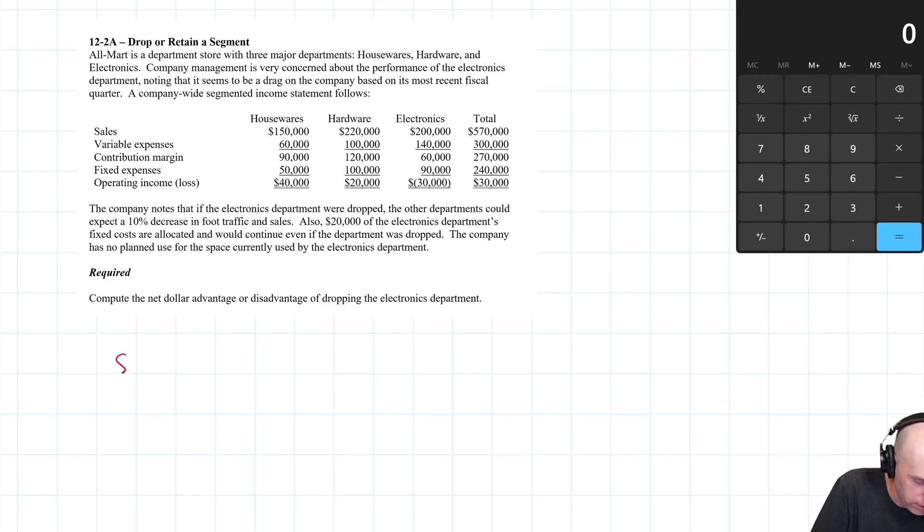I try to recreate the income statement. We got sales, variable expenses, contribution margin, fixed expenses, and operating income or loss in the case of electronics. We got the housewares, hardware, the electronics department, and we're going to do totals. I'm just going to recreate this income statement as if I had dropped electronics.